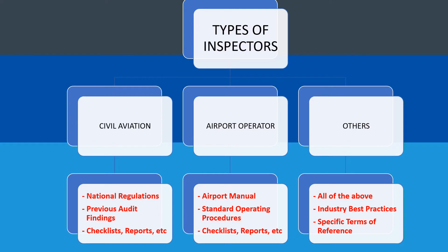We began our program by looking at the types of inspectors. We observed that the inspectors could either be from the civil aviation authority, or they could be coming from the airport operator, or from others such as the ACI, IATA, or another recognized institution that has a mission in your airport.